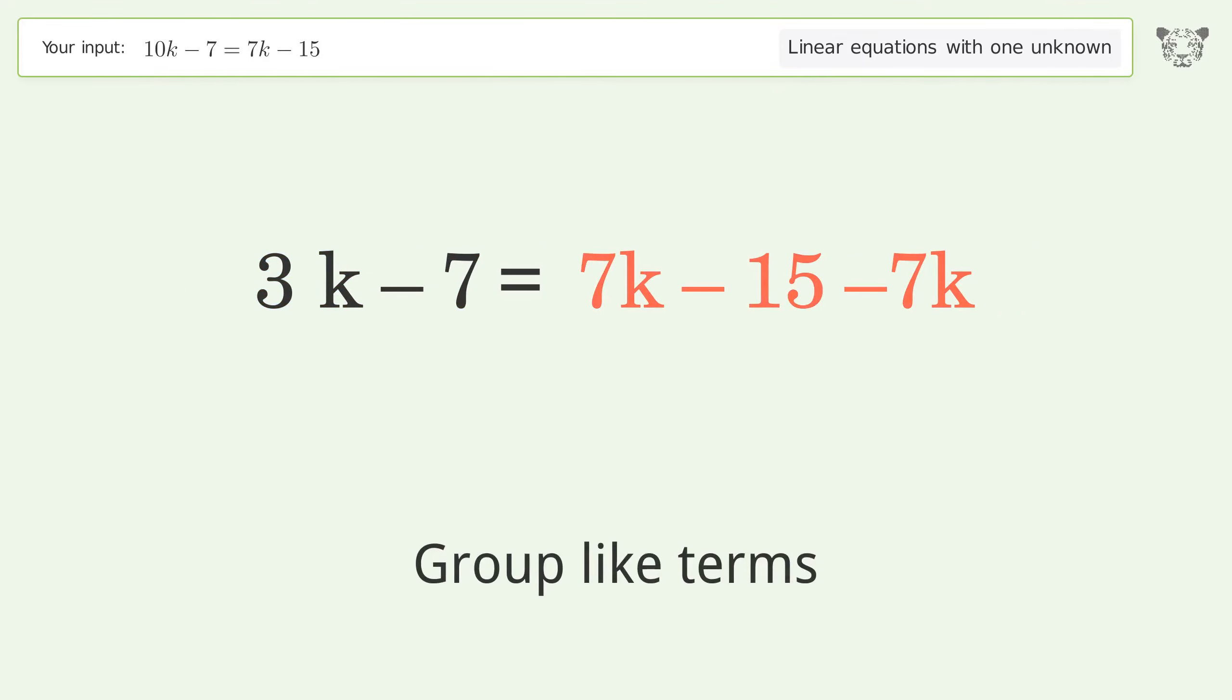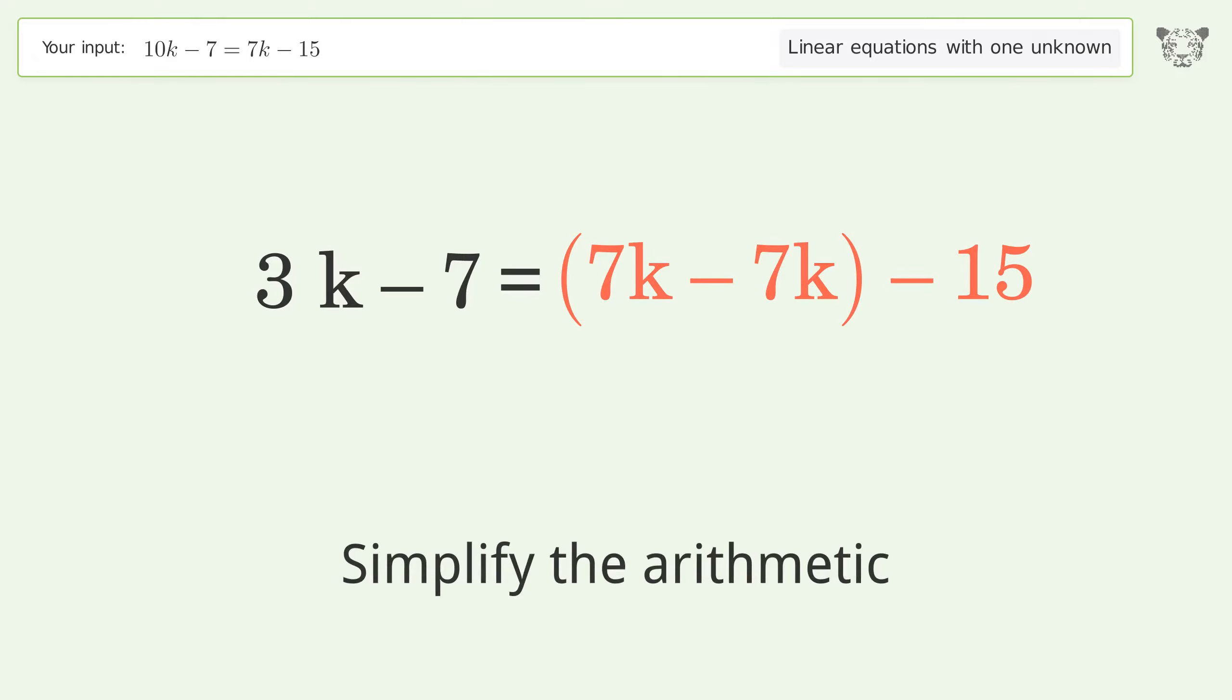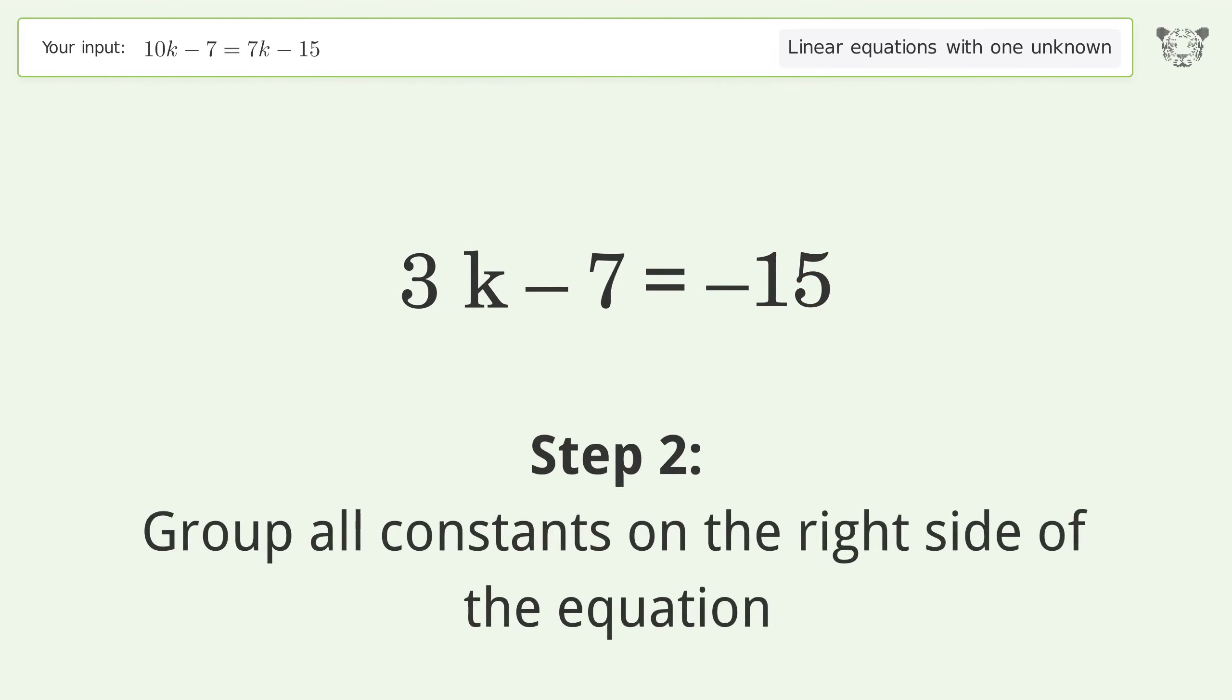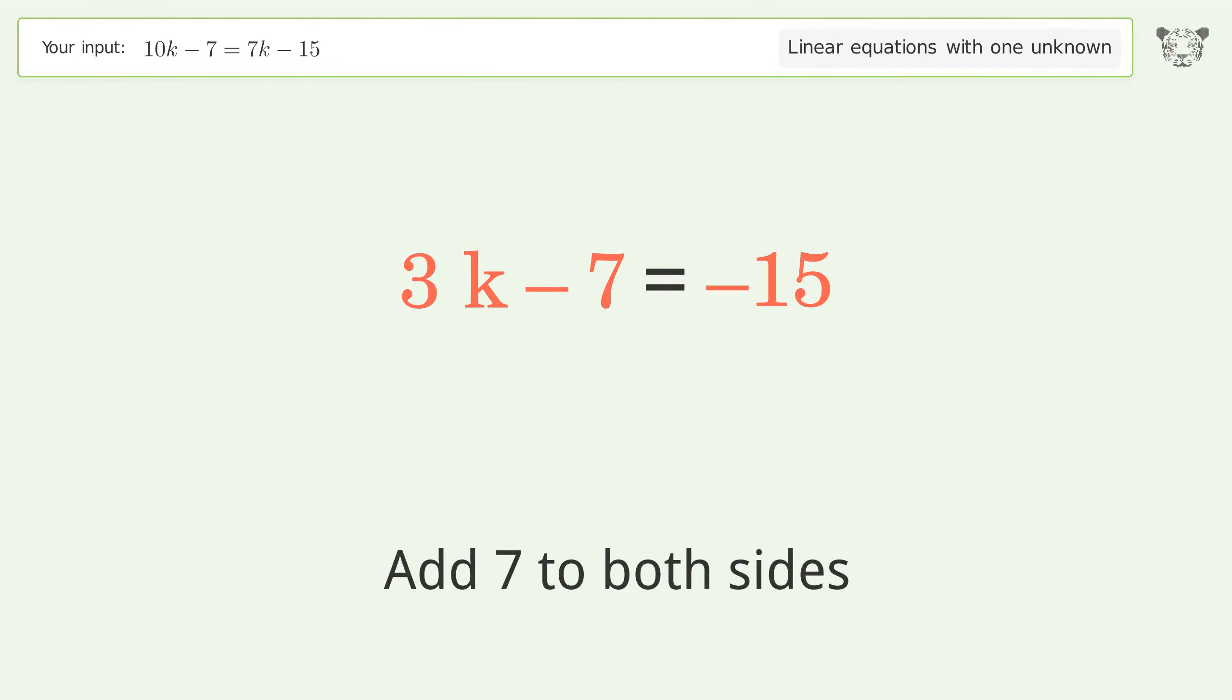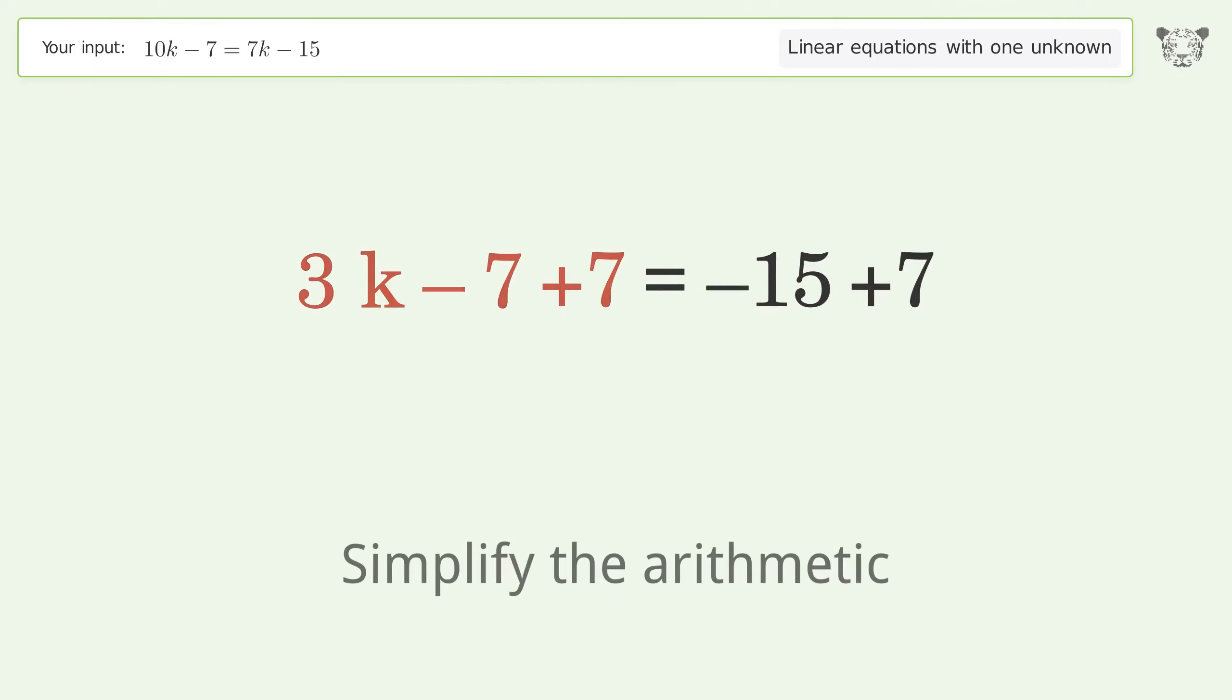Group like terms. Simplify the arithmetic. Group all constants on the right side of the equation. Add 7 to both sides.